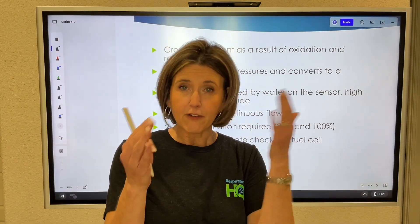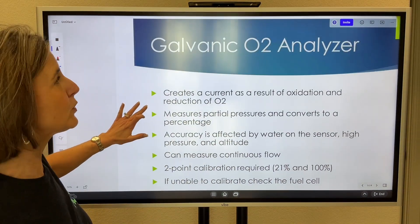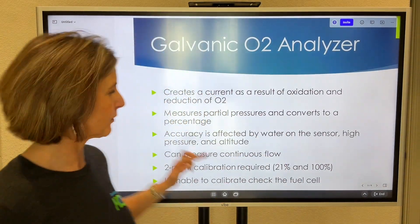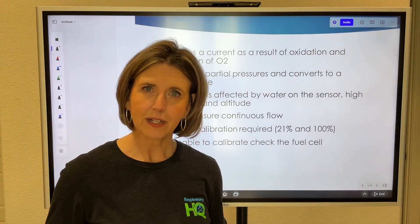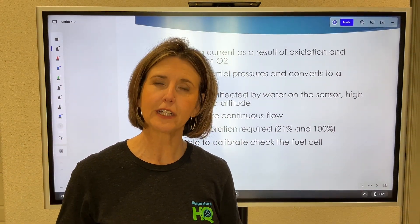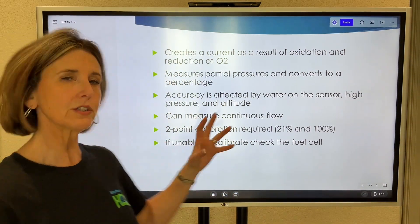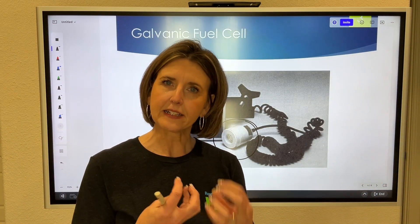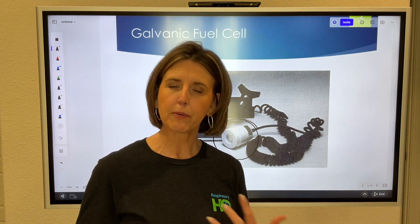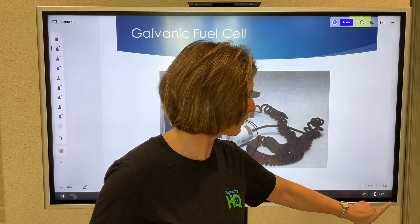The acceptable error is plus or minus 2%. On a galvanic fuel cell — and this is why I told you to remember it is a galvanic fuel cell — if you cannot get it to calibrate within that 2%, the only thing you can do is change that fuel cell. Remember, that fuel cell has an electrolyte solution inside it. When that electrolyte solution evaporates and dries up, it doesn't work and you have to replace it. That's all you can do with a fuel cell.